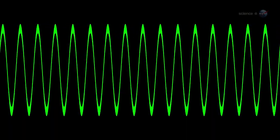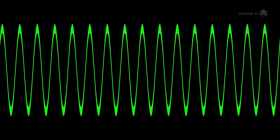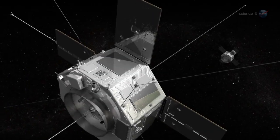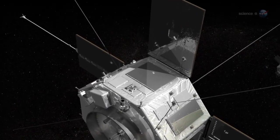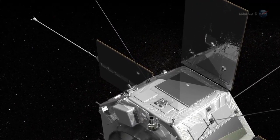He's careful to point out that these are not acoustic waves of the kind that travel through the air of our planet. Chorus is made of radio waves that oscillate at acoustic frequencies between 0 and 10 kilohertz. The long antennas of the radiation belt storm probes are perfect for detecting these kinds of waves.